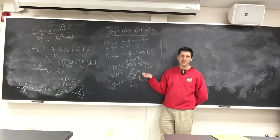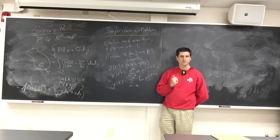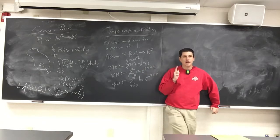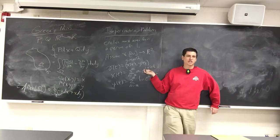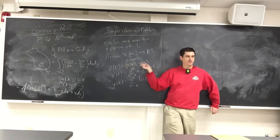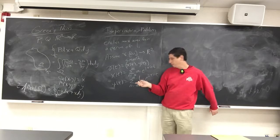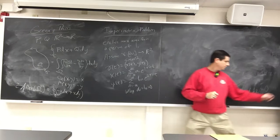Without loss of generality, I can choose the value of one coefficient for x and one for y — specifically the zeroth coefficient. Setting a₀ = 0 and b₀ = 0 just shifts the whole curve. So without loss of generality, a₀ = b₀ = 0, and the only coefficients we need to worry about are those where n ≠ 0.